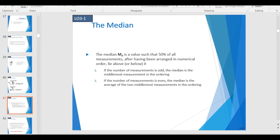The median, m sub d, is a value such that 50% of all measurements, after having been arranged in numerical order, lie above or below it. If the number of measurements is odd, the median is the middlemost measurement in the ordering. If the number of measurements is even, the median is the average of the two middlemost measurements in the ordering.